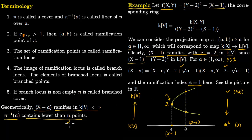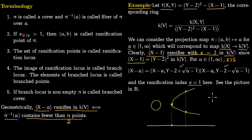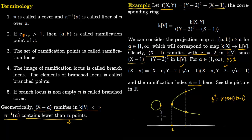We can also consider an elliptic curve, say y² = x(x+1)(x−1). In this case, ramification occurs precisely at the roots of the right-hand side: at x=0, x=−1, and x=1. Each of these corresponds to a ramification point, so an elliptic curve of this form has ramification at three distinct points.